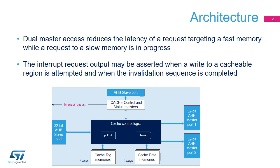The non-remapped traffic goes systematically to master 1 port. For any remapped region, traffic can be routed to either master port 1 or master port 2. The iCache flags an error and possibly asserts an interrupt request whenever it detects unexpected cacheable write accesses. An interrupt request can also be asserted upon completion of the cache invalidation sequence. The iCache does not manage AHB bus errors on master 1 or master 2 transactions, but propagates them back to the execution port that received the initial C bus transaction.